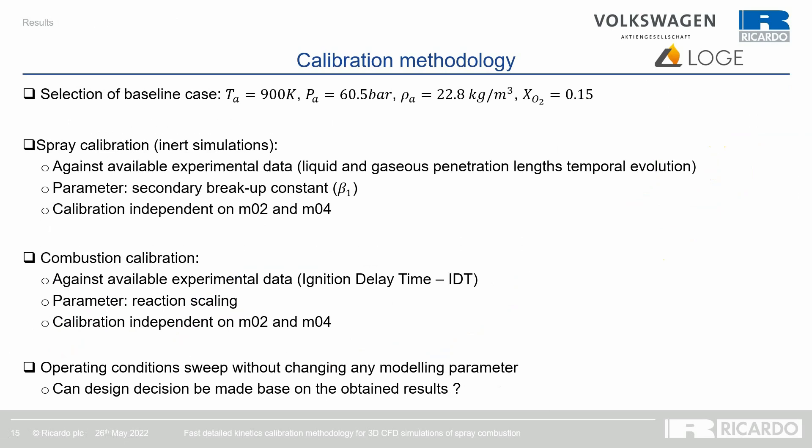The calibration methodology unfolds as follows. A baseline case is selected — the 900 K, 60 bar, 15% oxygen case. The spray models are first calibrated using the secondary breakup constant against the temporal evolution of liquid and vapor penetration length, done independently on both the coarse and fine grids. Combustion is then calibrated against the experimental ignition delay time, where the reaction rate scaling is the calibration parameter, independently on both grids and for all chemical mechanisms.